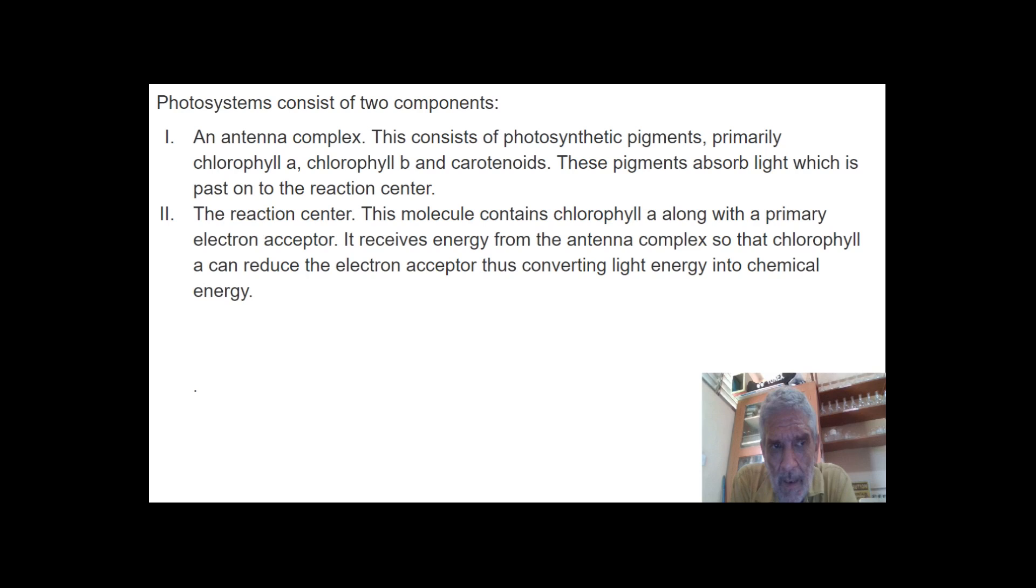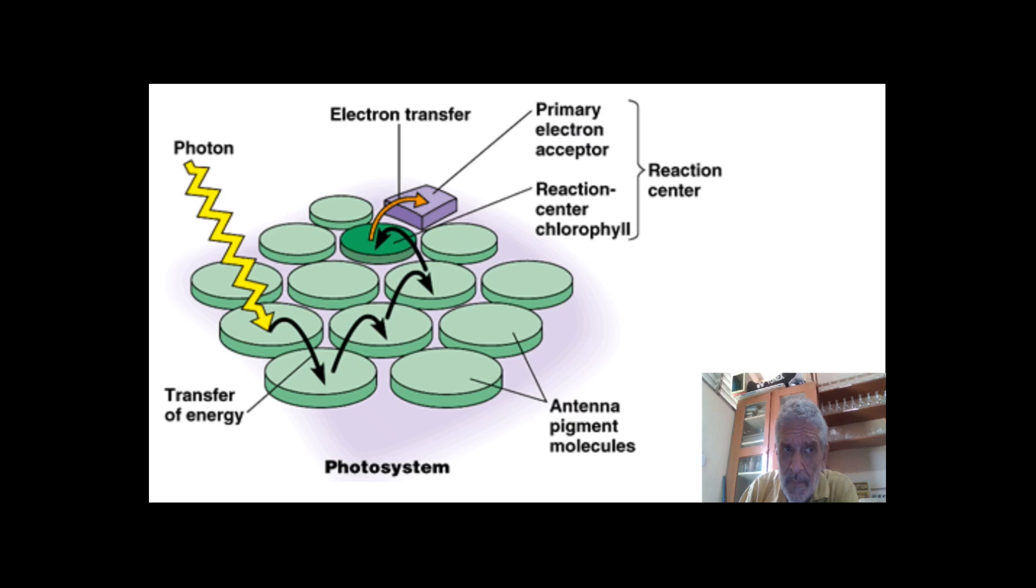Then you have a reaction centre which is a chlorophyll molecule along with a primary electron acceptor. It receives energy from the antenna complex so the chlorophyll can be reduced and the electron acceptor converts light energy into chemical energy. So this is the system diagrammatically. Photons go into a series of antenna pigments. These antenna pigments ultimately hand the electron to the reaction centre chlorophyll molecule, which can transfer it to a primary electron acceptor.